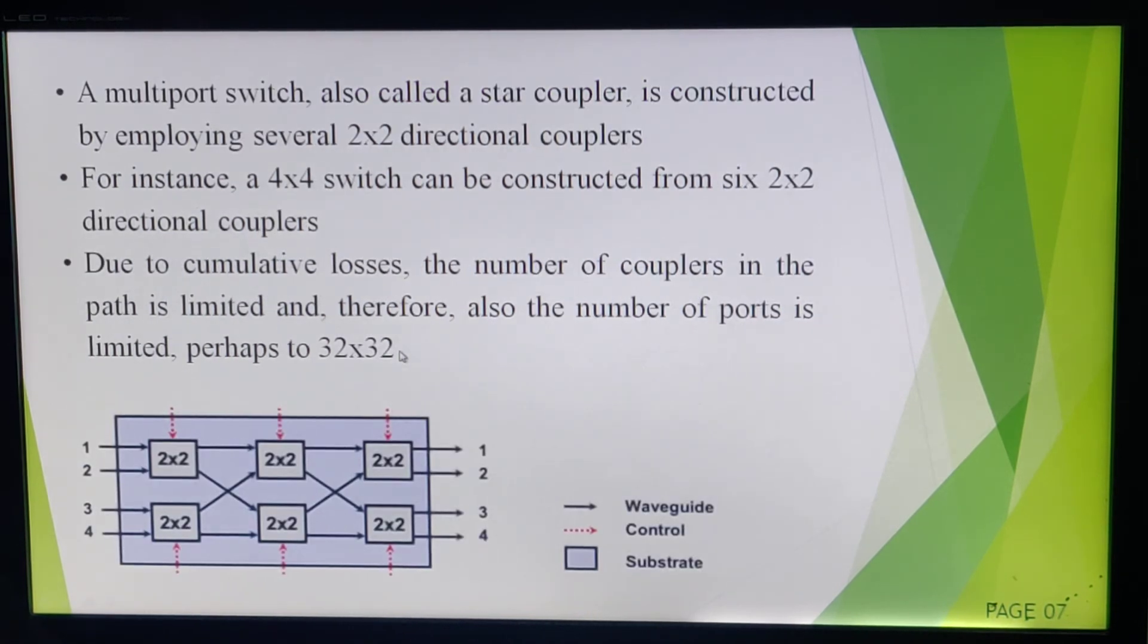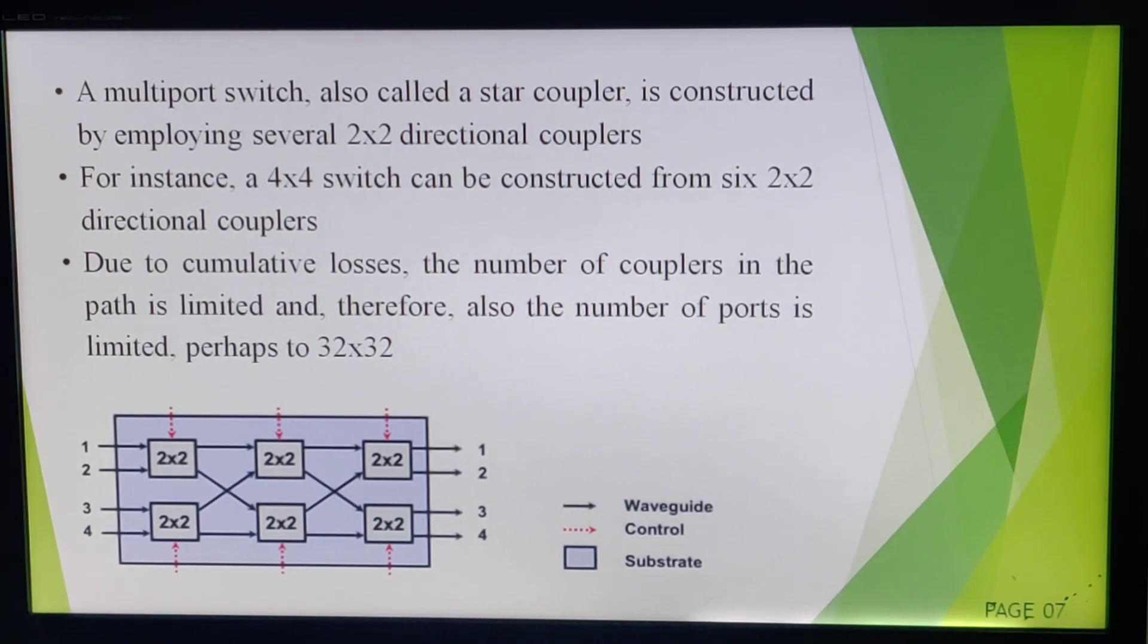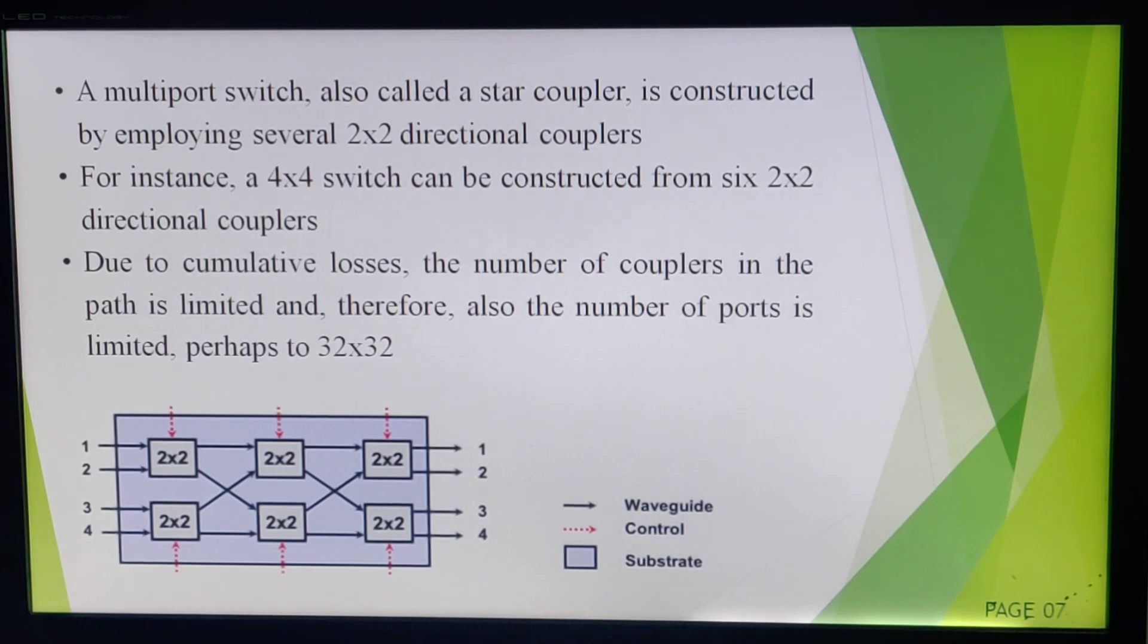Next, this is a multiport switch. Multiport switch is also known as a star coupler. In next slides we will discuss what we mean by star coupler and what is a coupler. Coupler is a device which couples two signals through optical fiber. A multiport switch is constructed by using two-by-two directional coupler. This is a switch—this is a network we have shown in which I have used six two-by-two directional couplers.